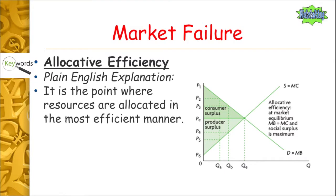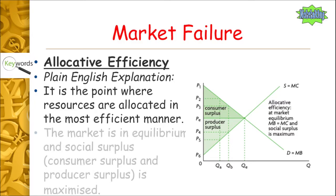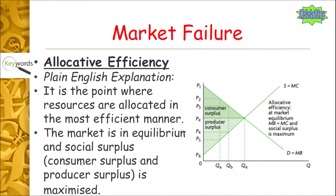Now we're going to look at the idea of allocative efficiency. In plain English, this is the point where resources are allocated in the most efficient manner. Our market is in equilibrium and our social surplus is maximised. Social surplus, if you can't remember, is the point where consumer surplus and producer surplus are fully maximised, as shown in the diagram. We have a full area of consumer surplus and a full area of producer surplus, both meeting at the equilibrium point. So at that price point PE, we have a number of goods produced QE, and everything that is made is sold.